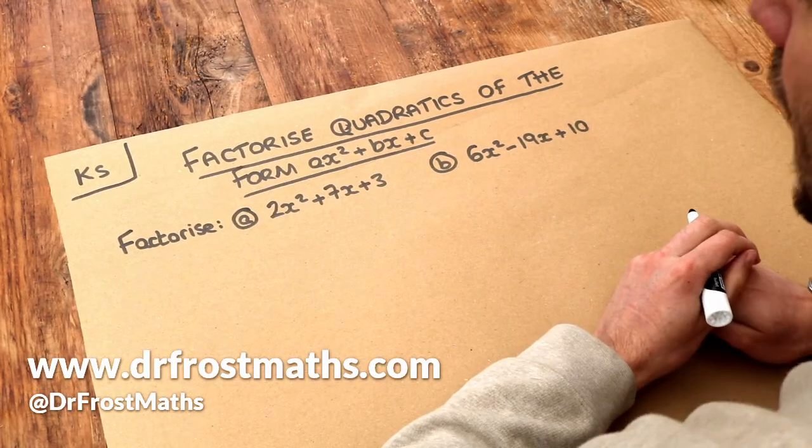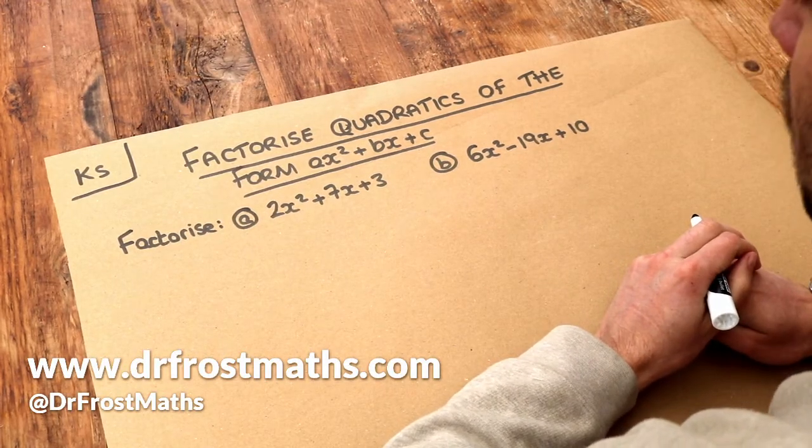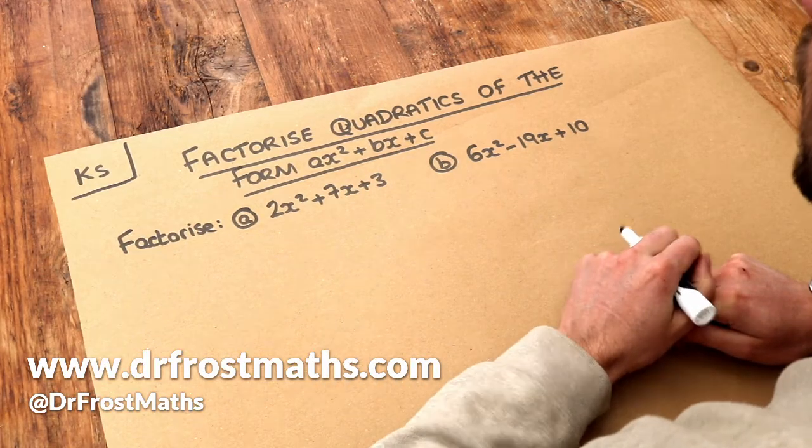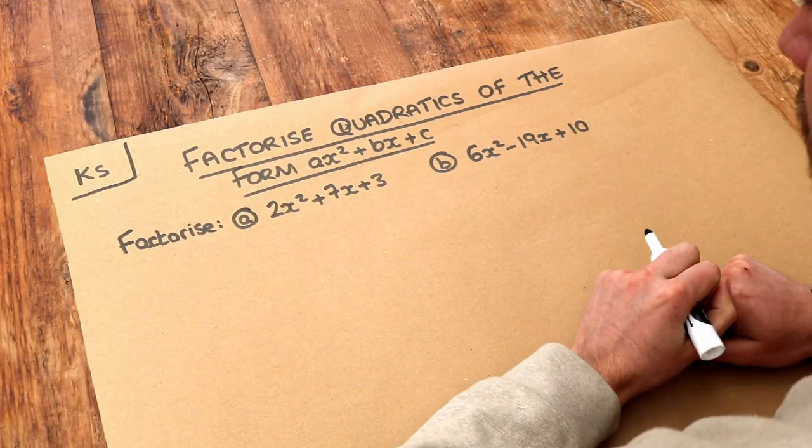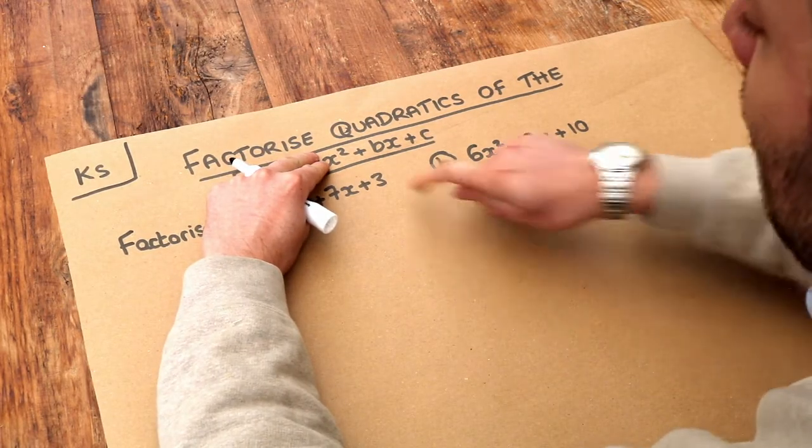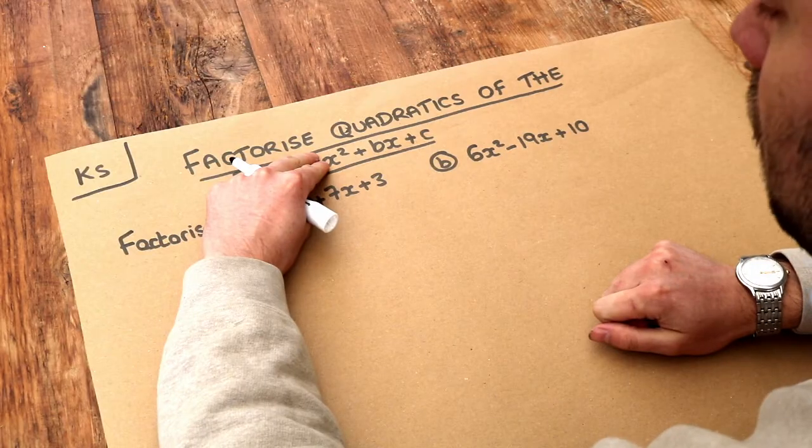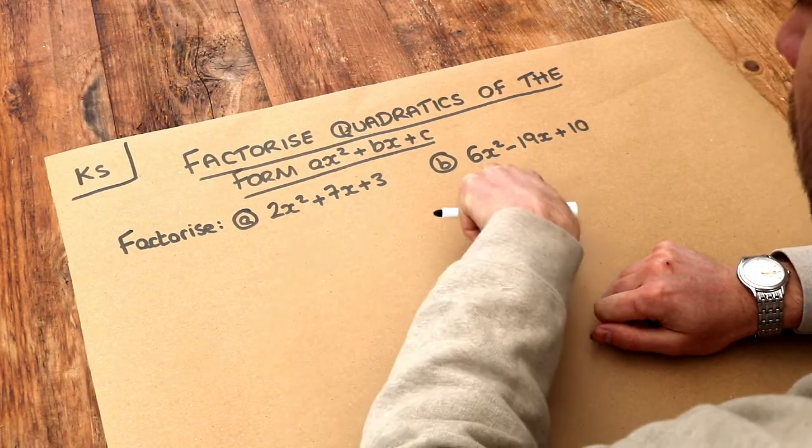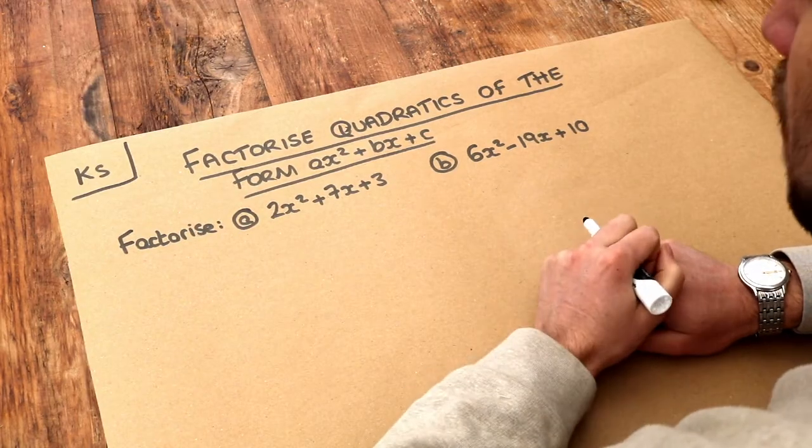Hello and welcome to this Dr. Ross Maths key skill video on factorising quadratics of the form ax squared plus bx plus c. We've previously seen how to factorise quadratics where we didn't have a number in front of the x squared, so where we had say x squared plus 5x plus 6. Now when we have a number in front of the x squared, like a 2 here or a 6 here, then it does become a bit more difficult.